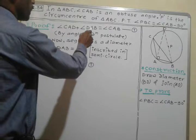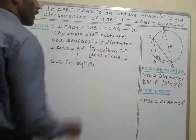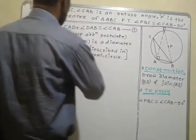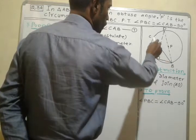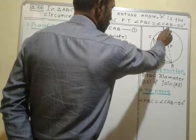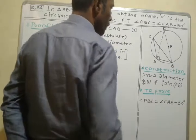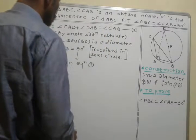Angle CAD plus angle DAB is equal to angle CAB by angle addition postulate. This angle CAB is made from angle CAD plus angle DAB. This is equation 1.